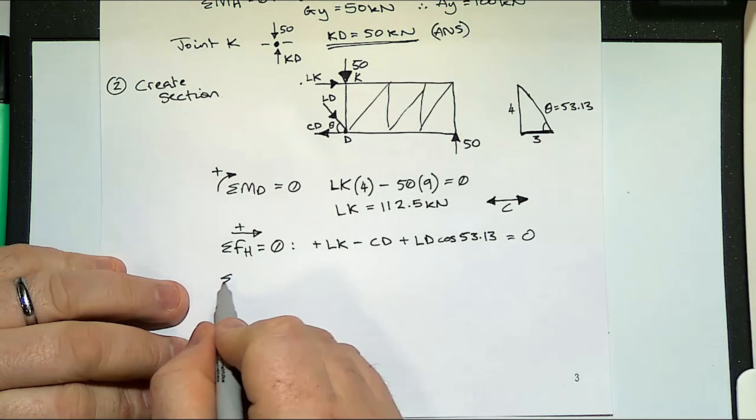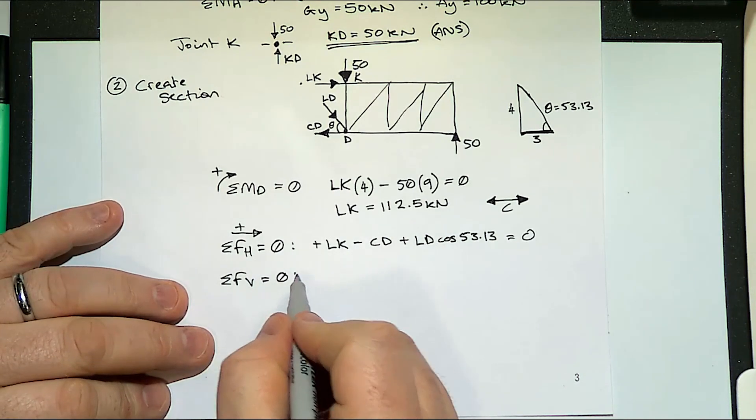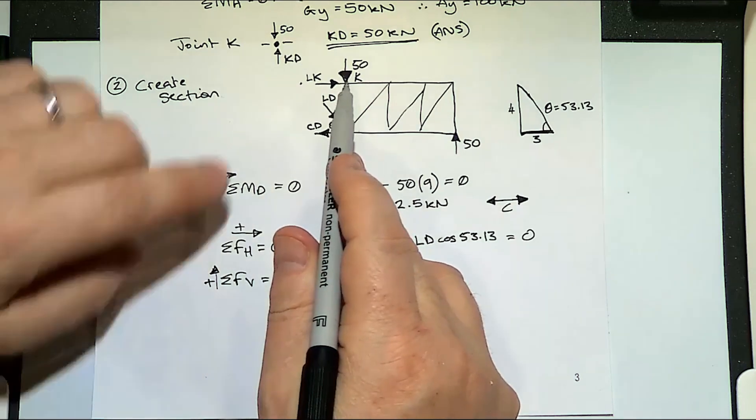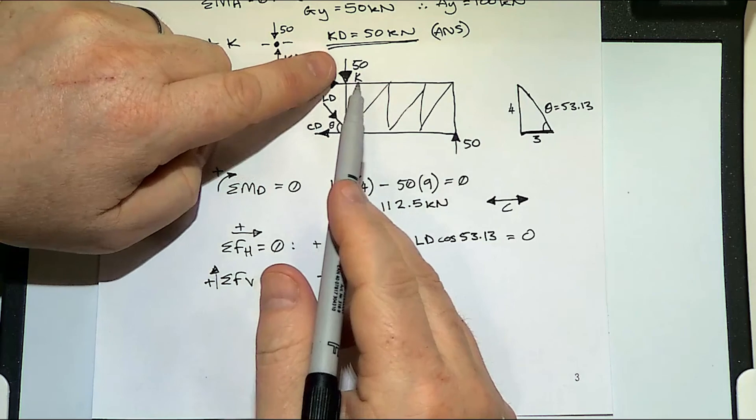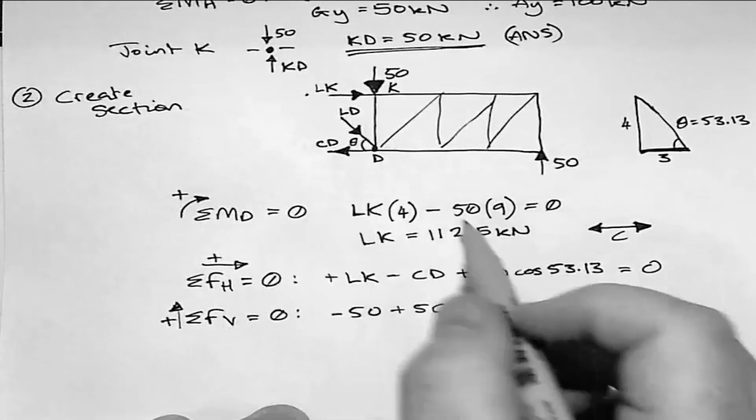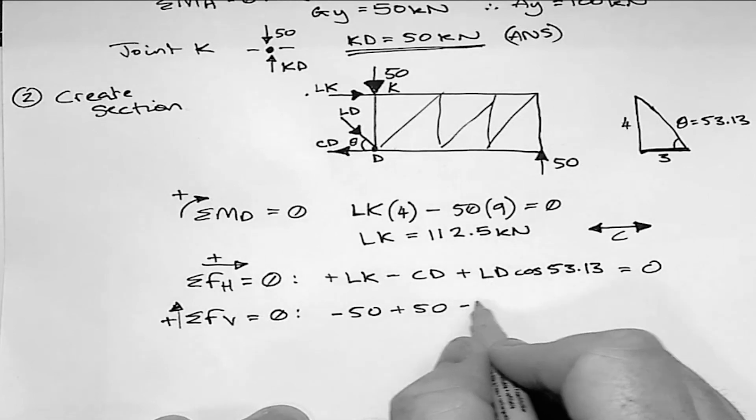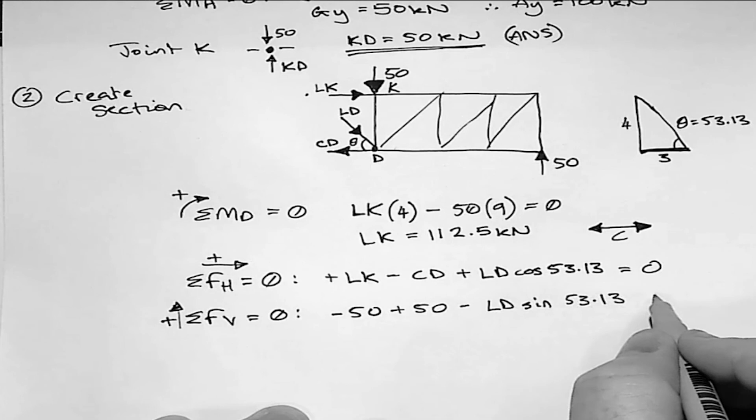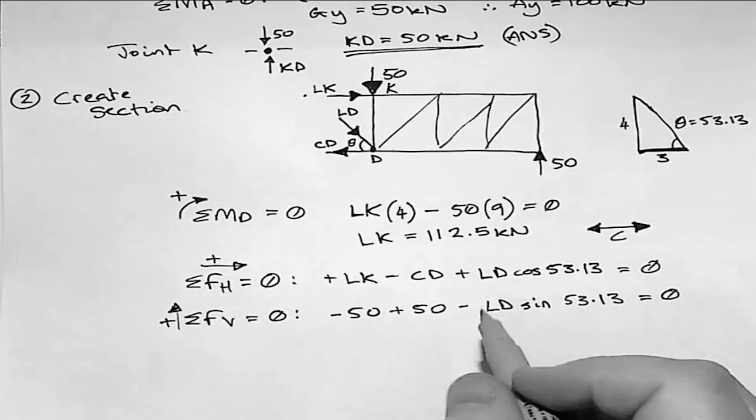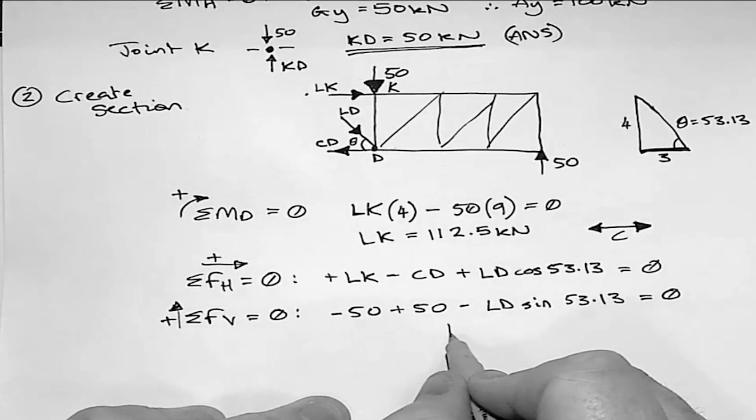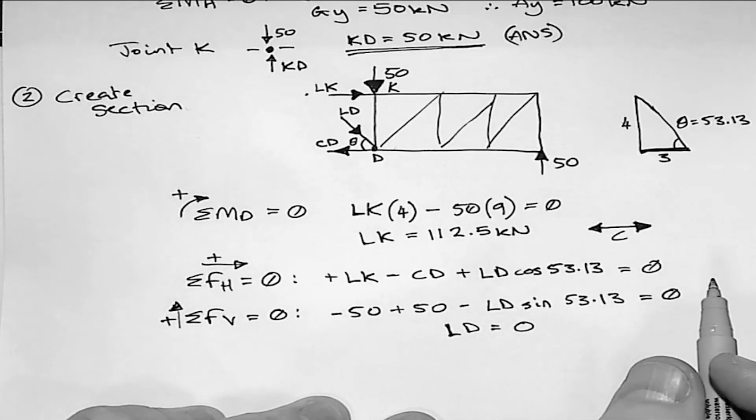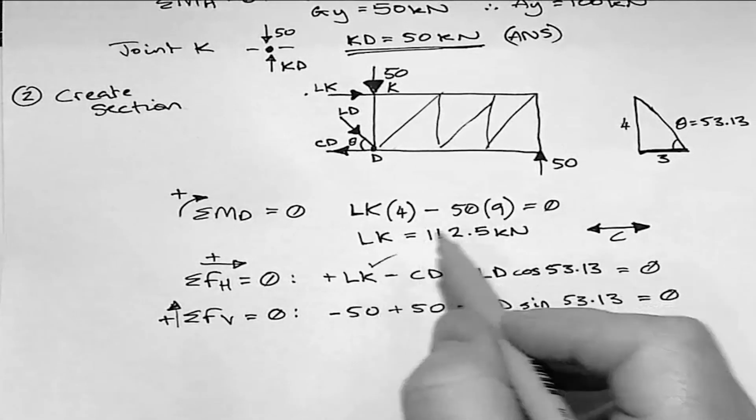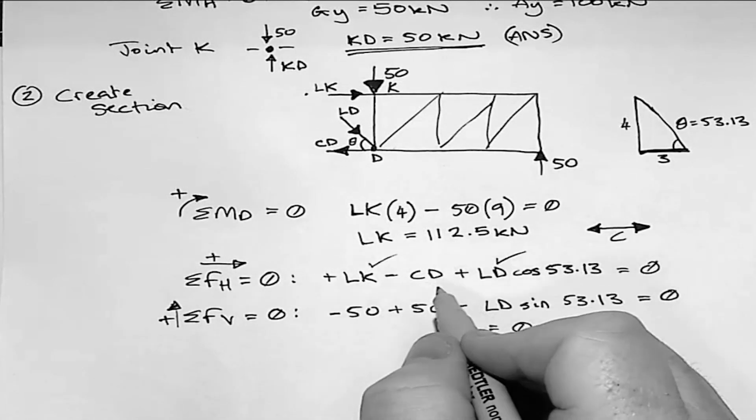We could also look at our sum of forces vertical. If we were doing that we've got 50 coming down, we've got this 50 coming down so minus 50, coming down there we've got 50 going up, and then we've got this LD sine of the angle 53.13 equals zero. Now from that our LD equals zero. Zero so we've got our LK, we've got our LD, if you put those two in then you can find out what your CD is.